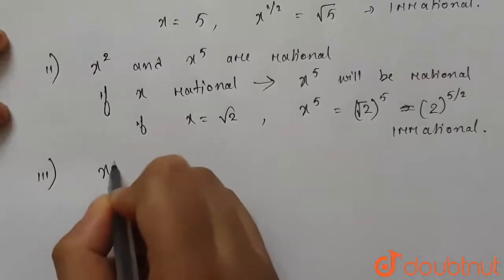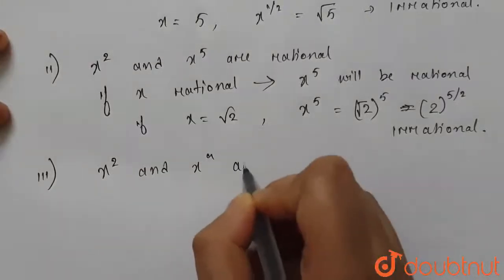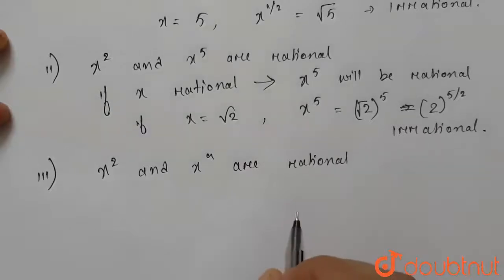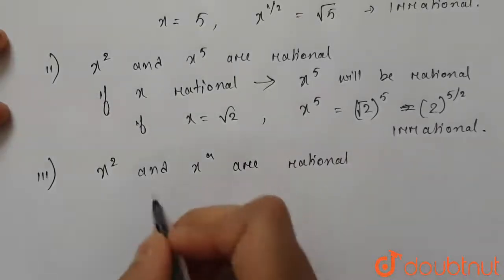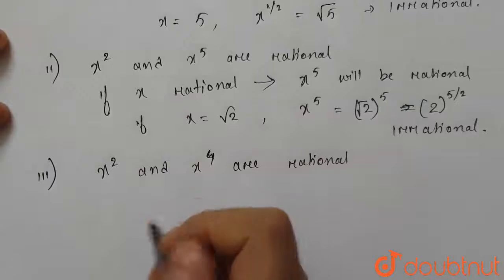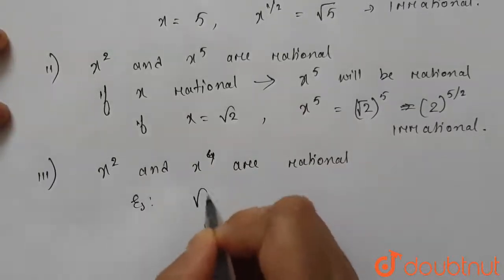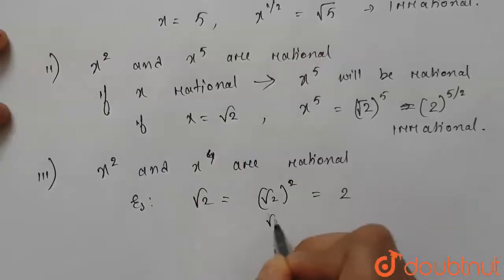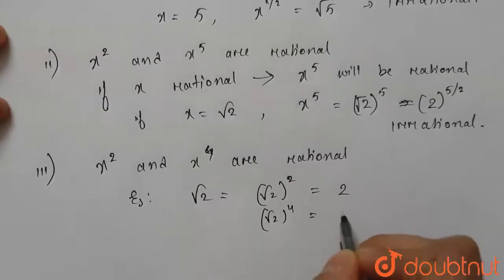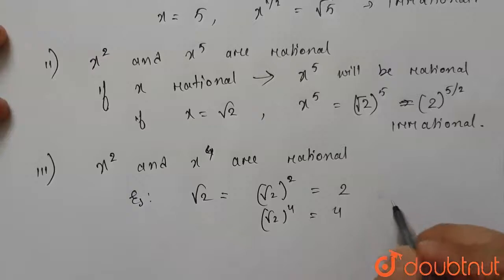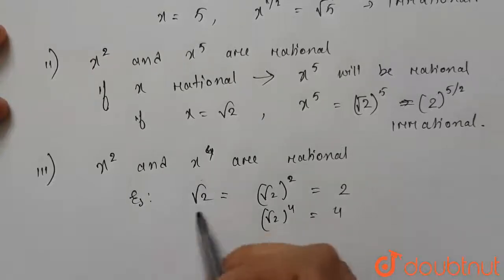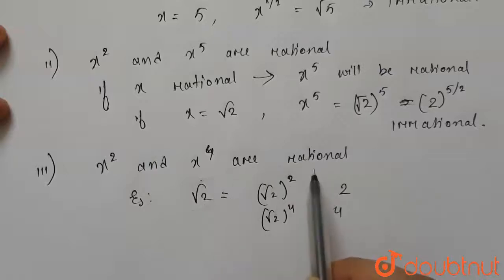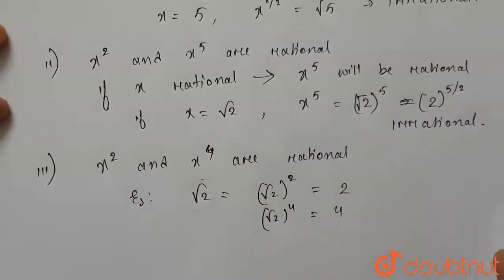The third condition is x square and x to the power 4 are rational. Does this imply x is rational? No, because these are even powers. For example, if x equals root 2, then root 2 to the power 2 equals 2, and root 2 to the power 4 equals 4. Both are rational, but root 2 itself is irrational. So x square and x to the power 4 being rational does not imply x is rational.